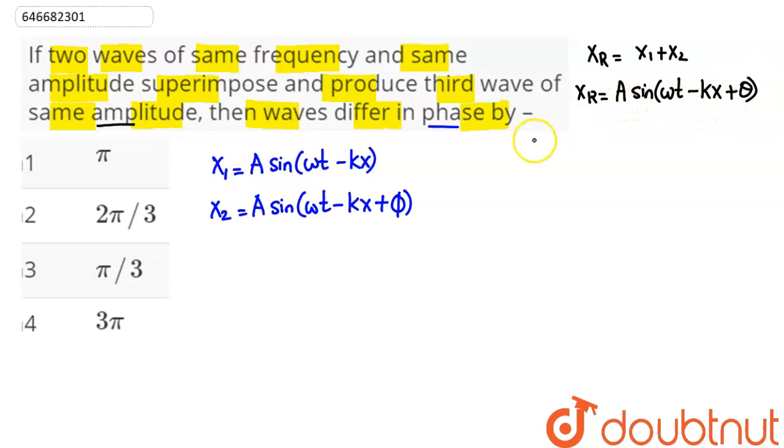The resultant amplitude can be found using the phasor diagram concept: Aᵣ = √(A₁² + A₂² + 2A₁A₂cos φ).